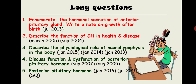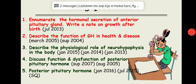There are five questions already asked from this chapter. First: enumerate the hormonal secretion of the anterior pituitary gland and write a note on growth after birth. Second: describe the function of growth hormone in health and disease. Third: describe the physiological role of neurohypophysis in the body. Fourth: discuss the function and dysfunction of the posterior pituitary hormones. Fifth: the short question on posterior pituitary hormones.